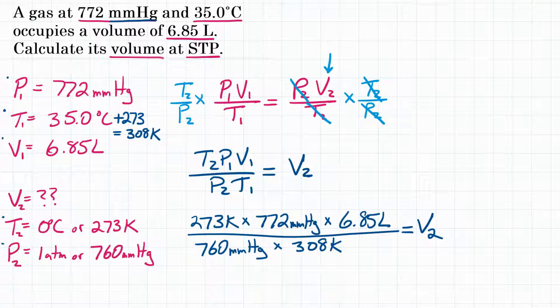Before we do our math, let's check that our units cancel. We have Kelvin on top and bottom. We have millimeters of mercury on top and bottom. That leaves us with just liters, which makes sense since we're solving for volume.